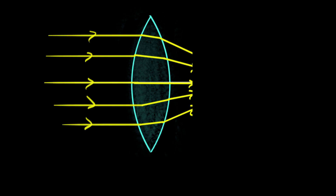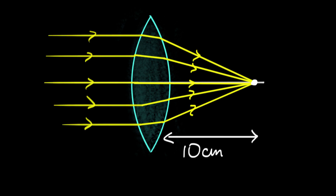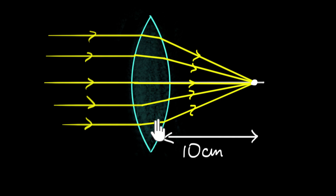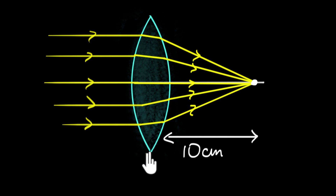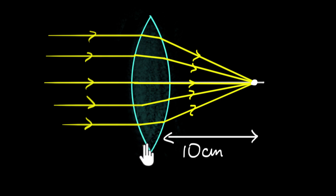If we wanted to construct a lens of a particular focal length, say 10 centimeters, we might wonder what the focal length of a lens really depends on. Maybe it depends on how curved the surfaces are, or maybe it depends on the refractive index of the material. To build a particular lens, we need to know the exact relationship between the focal length and these various parameters. That's exactly what we'll do in this video.